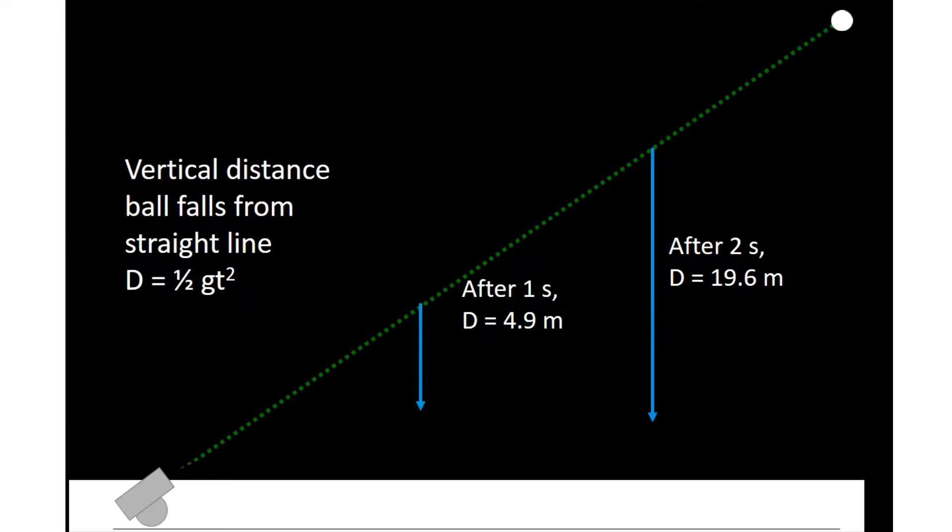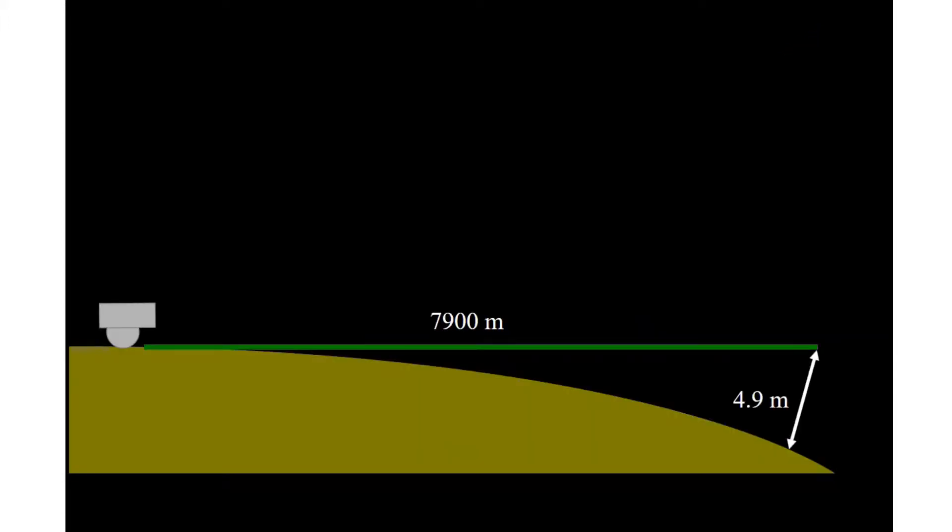If Earth were flat, the cannonball would always wind up hitting the Earth eventually. But, if you have a launch velocity such that the downward deviation exactly matches the downward curve of Earth's surface, your cannonball would never hit. It turns out that Earth's surface curves downward 4.9 meters for every 7,900 meters across, like this.